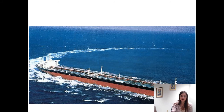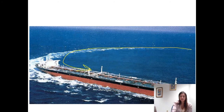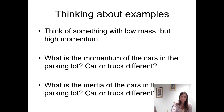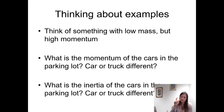Here's an example of a supertanker changing its velocity because it's turning. To be able to turn, it has to change its direction — so they really have to think that turn through well in advance. Now think about examples with low mass but high momentum. What would you need? You'd need a low mass — something small or lightweight — but high velocity to get high momentum.